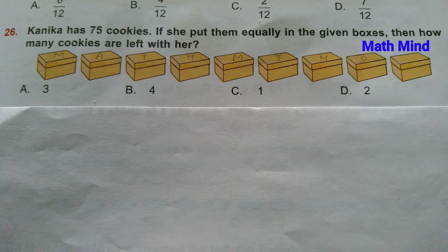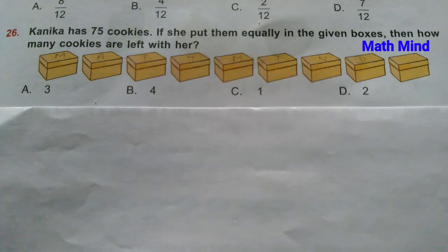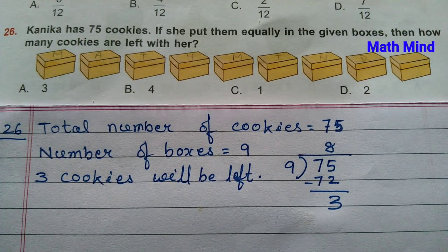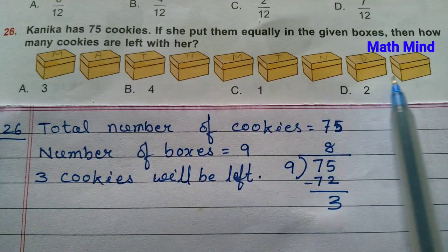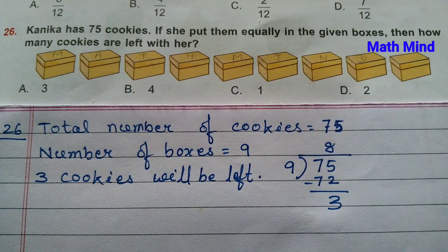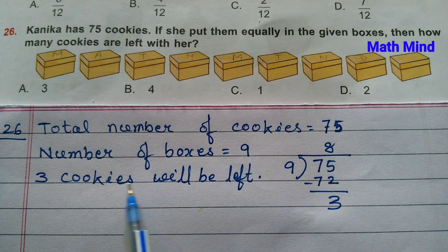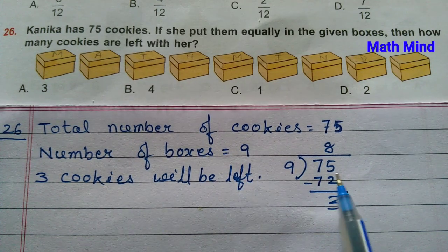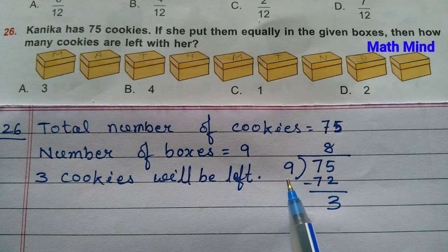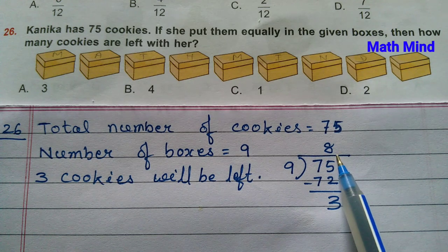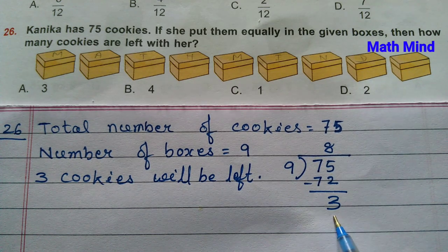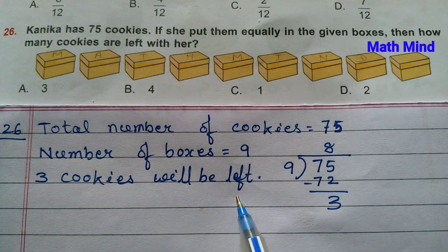Question number 26: Konika has 75 cookies. If she puts them equally in the given boxes, how many cookies are left? Counting the boxes: there are 9 boxes. Total cookies: 75. Dividing 75 by 9 gives 8 as quotient and 3 as remainder. So 3 cookies will be left. Option A is correct.